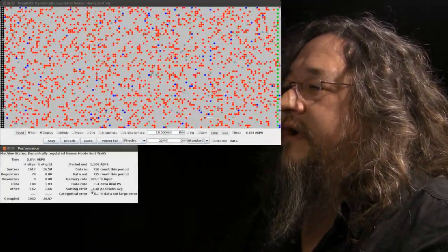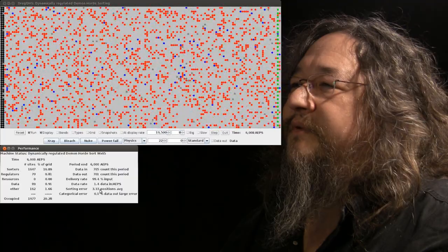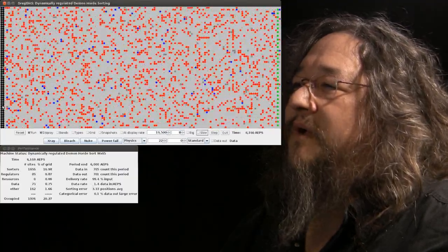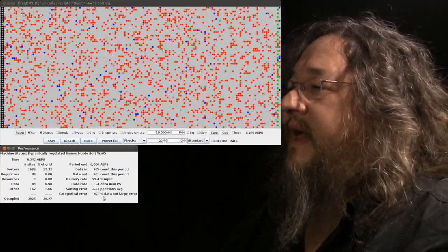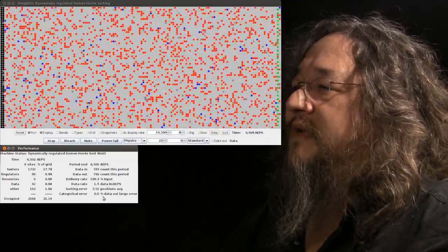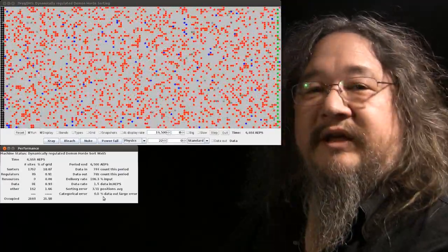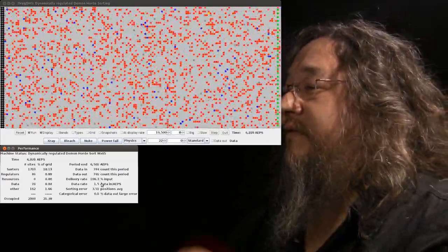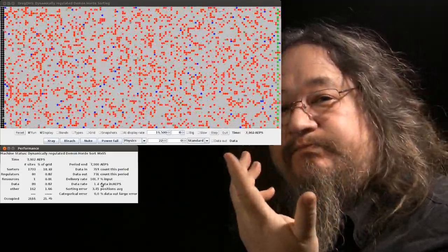Now we're doing a little better. The sorting error is like down to about three and a half positions on average, plus or minus, which is not too bad. And the categorical error is a tenth of a percent, sometimes never, over the course of a 500 step period. Not too bad.